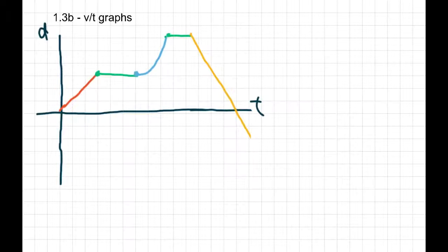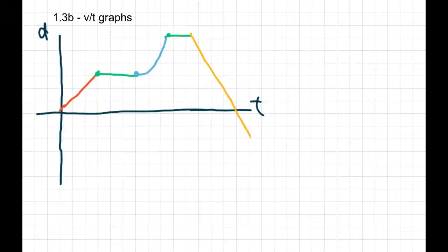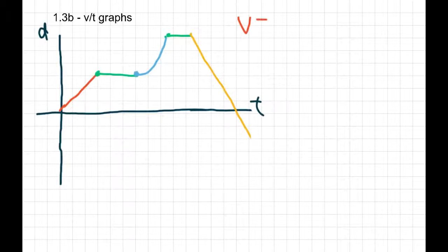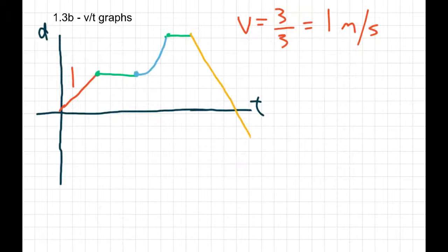So in the first orange section, we're going from a distance of 0 up to 3, and our time is going from 0 to 3. A slanted line like that — the slope of the line is the change in distance over time, which is distance over time, which is our velocity. So when you have a slanted line, velocity is just the rise over the run. In this case we'd have a change of 3 over 3, so we have a velocity of 1 meter per second.